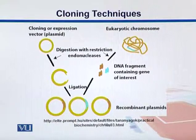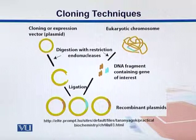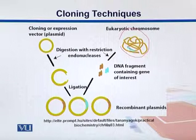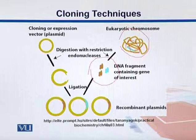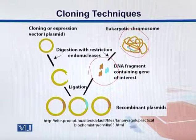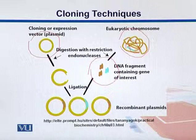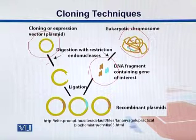In general, the cloning technique works as follows: we take this foreign DNA coming from a eukaryotic chromosome — the blue area is where we have the gene of interest. We fragment that DNA containing the gene of interest and get different fragments. Similarly, we take a cloning vector, like a plasmid in this example, and digest it with the same endonuclease, so their ends are similar.